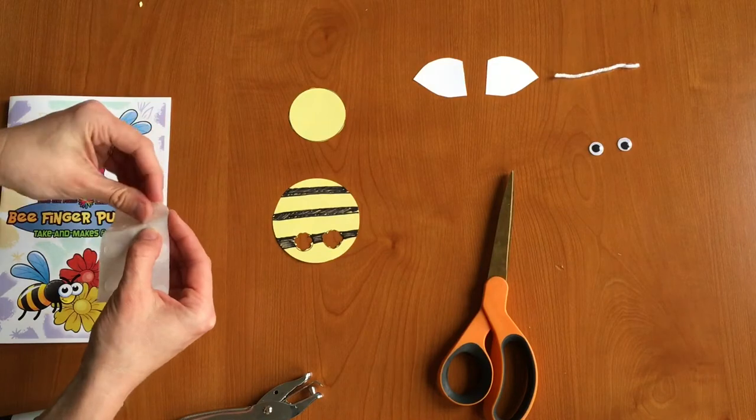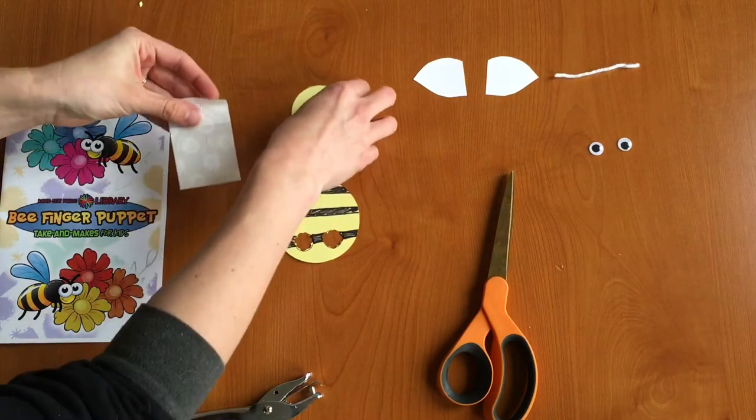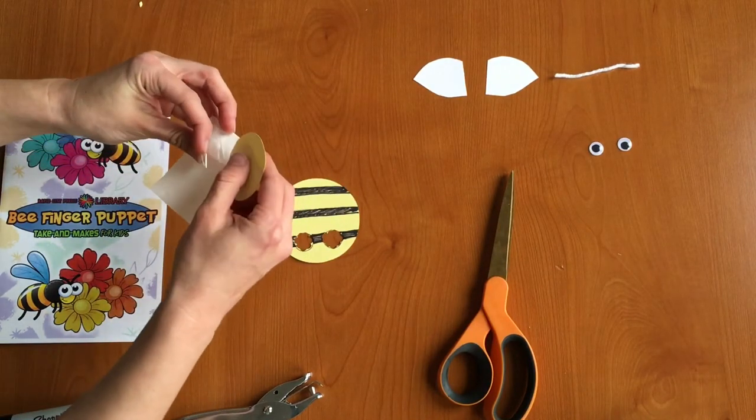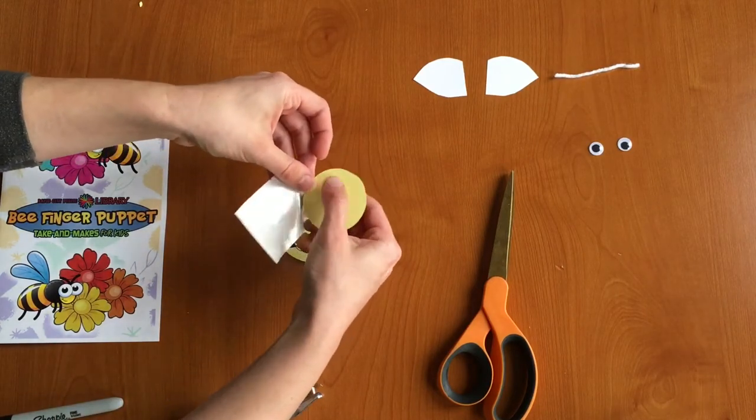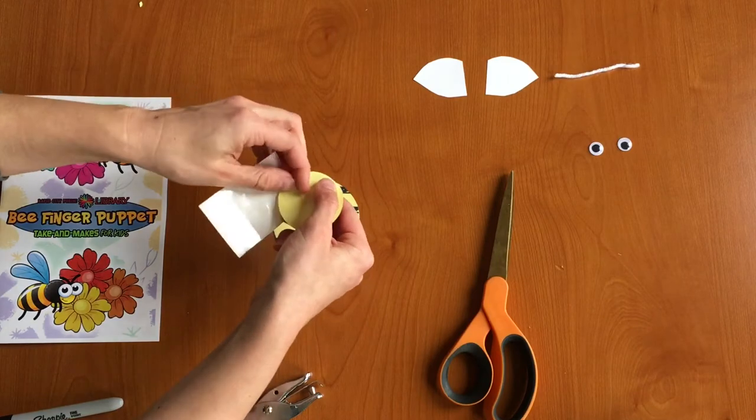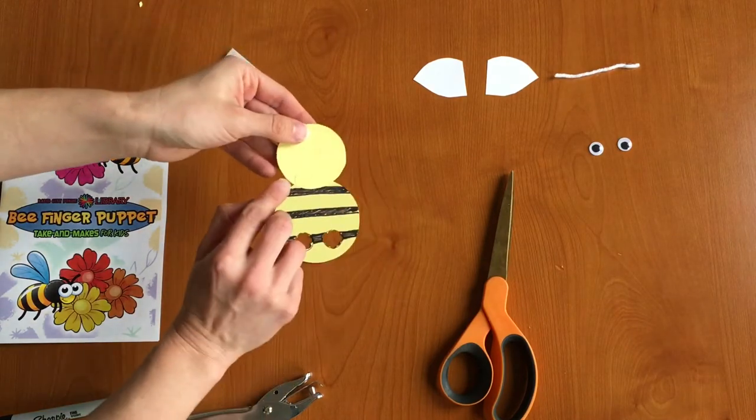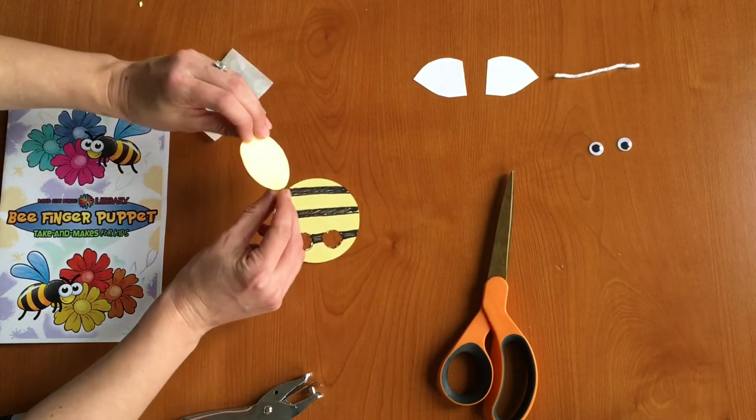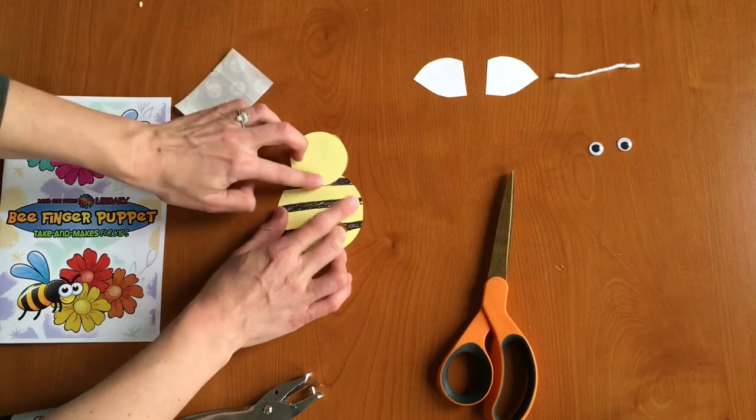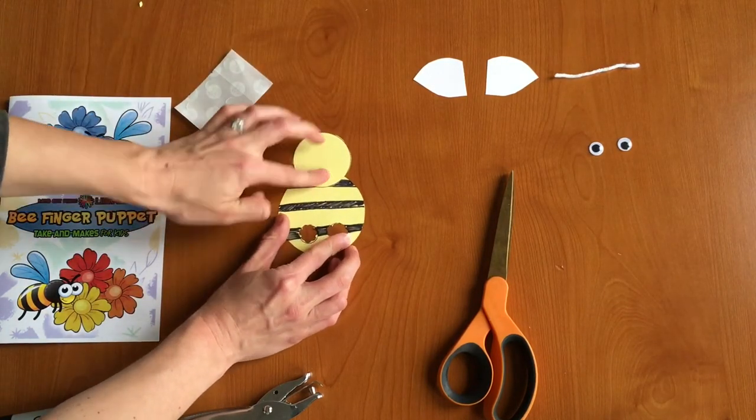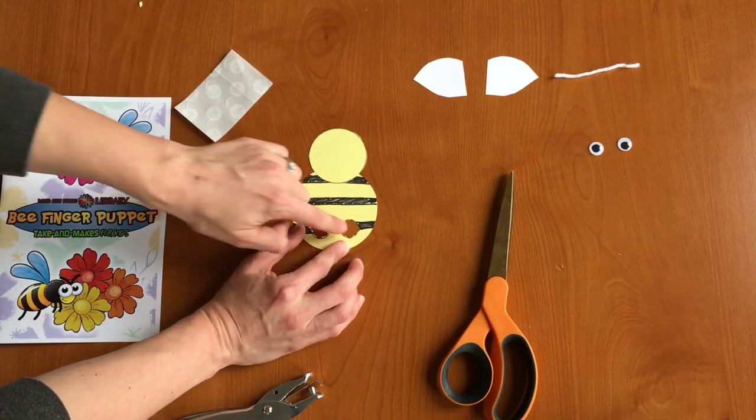Next we're going to use our glue dots and we're going to start to put our bee together. So we're going to take one glue dot, stick it to the bottom and back of the medium sized circle. So see how I have it on the bottom there? And we're going to flip that over and attach the head to the bee's body just like that. Now we want to attach the head on the opposite side of the two small circles.